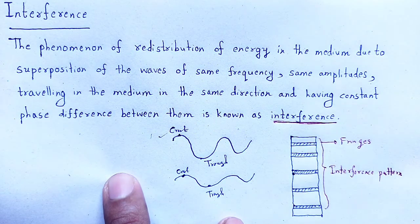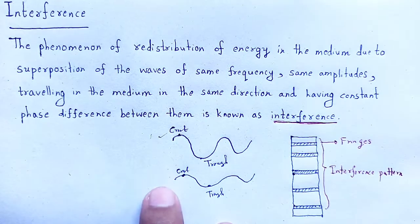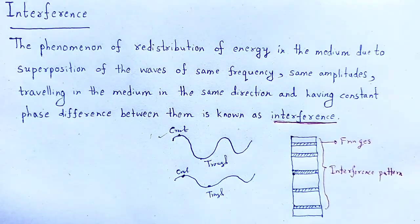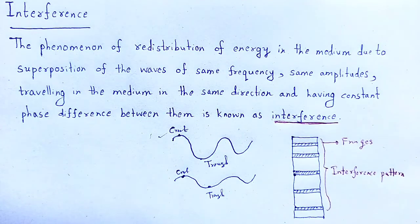We observe the phenomenon of interference and obtain the interference pattern. There are two methods to obtain interference, and these methods are known as division of wavefront and division of amplitude.